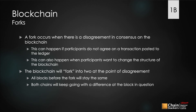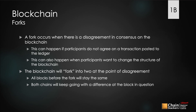The blockchain will fork into two at the point of disagreement — just think of a fork in the road where one path splits into two paths and you decide which direction to go. All blocks before the fork will stay the same chain, and both chains will keep going with the difference starting at the block in question.